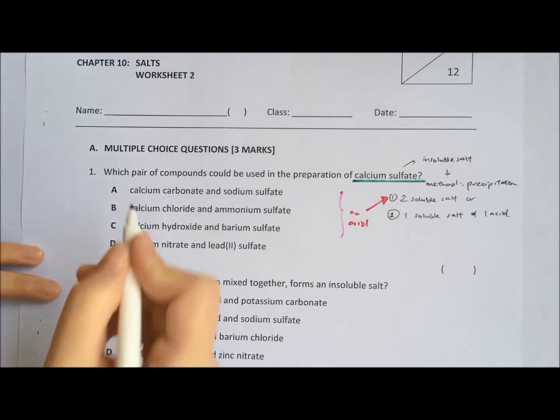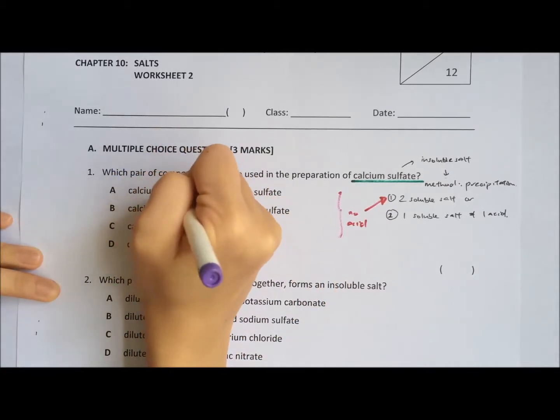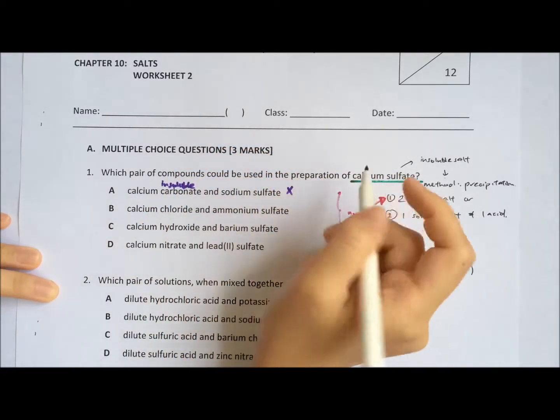So for option A, calcium carbonate is insoluble, so A is already wrong.